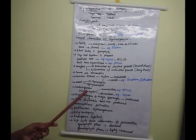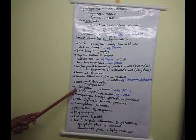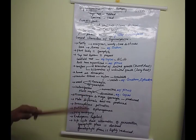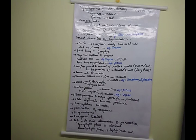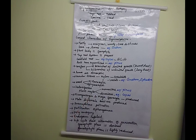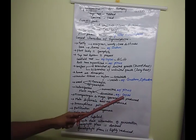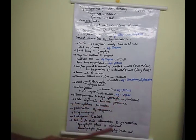Gymnosperms are heterosporous — producing two different types of spores. They can be monoecious or dioecious. Monoecious means the male and female cones are produced on the same plant — a good example is Pinus. Dioecious means the male and female cones are produced on separate plants — a good example is Cycas.